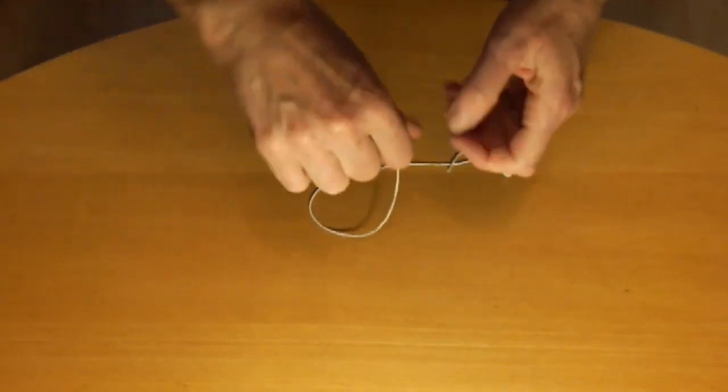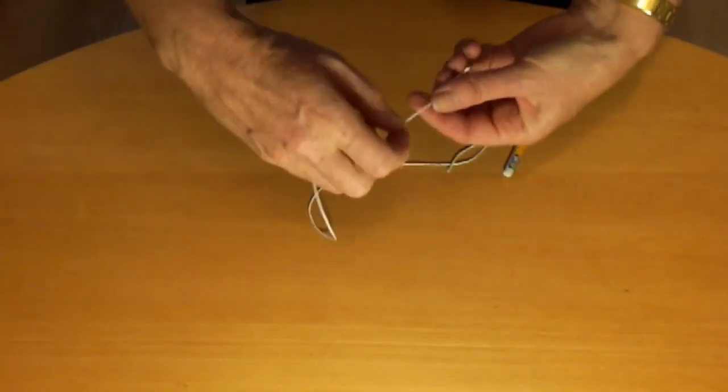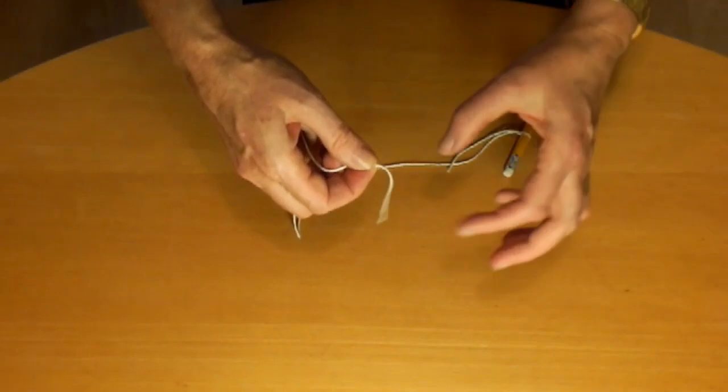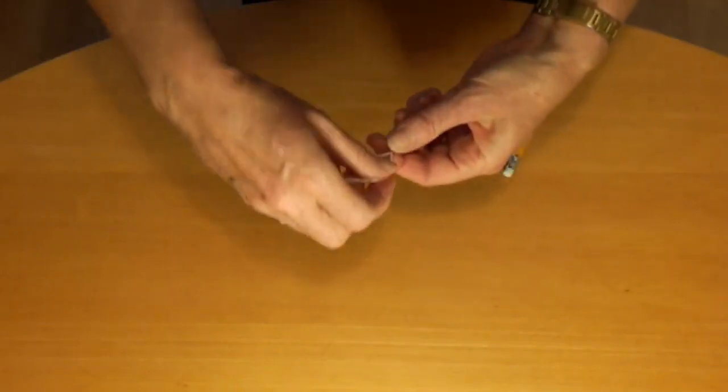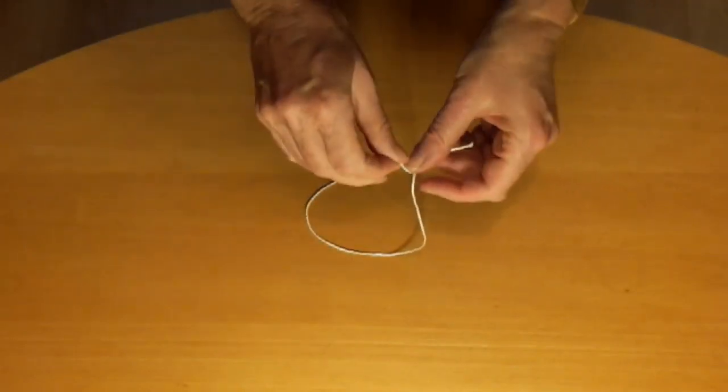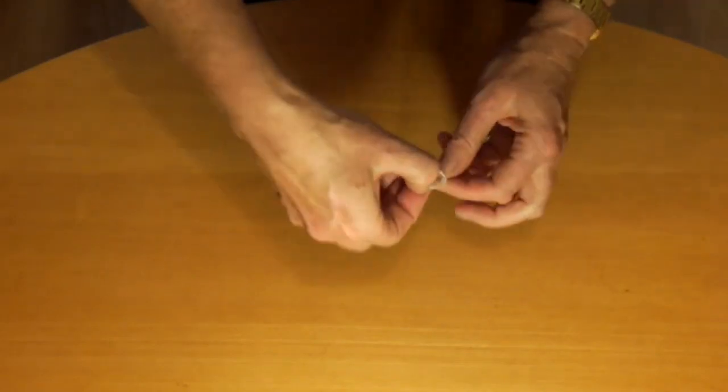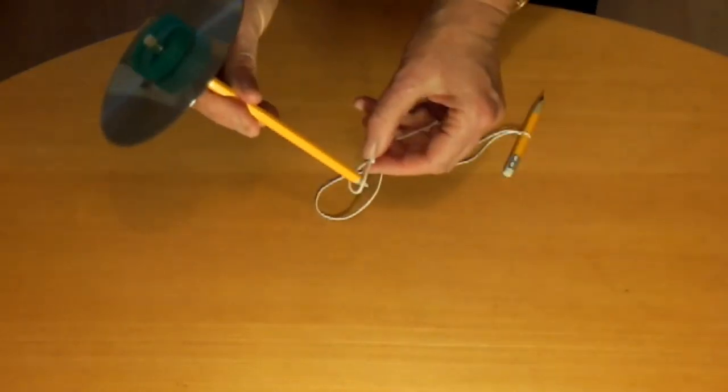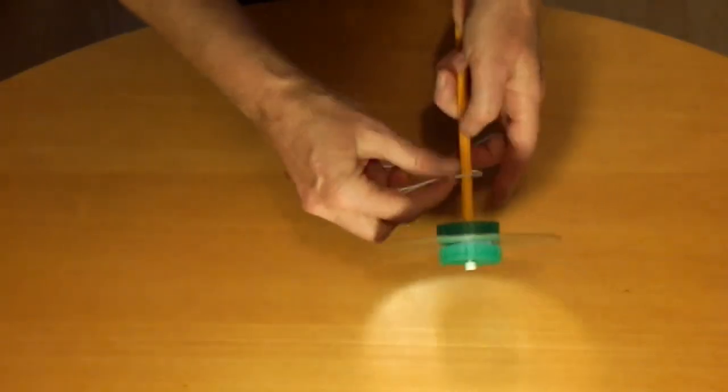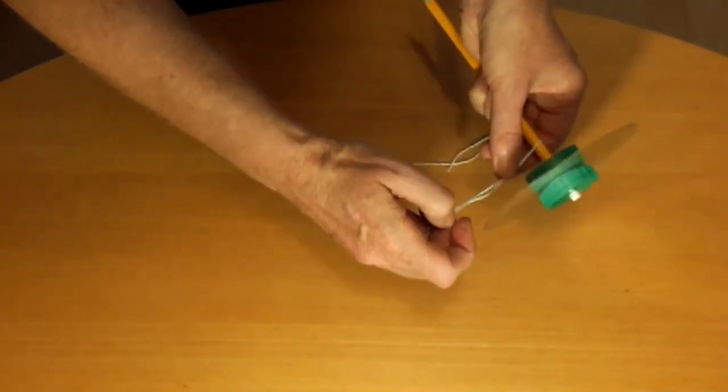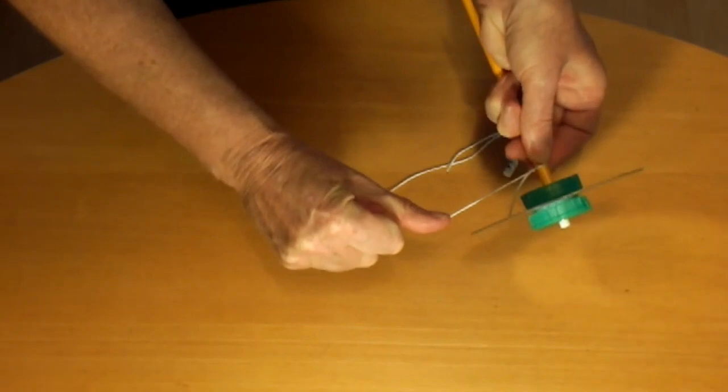Now I'll show you the other end. So leave a reasonable length. Wrap it around your finger. Make a loop. Push this end up through the loop. Put the pencil through it. Slide it up near the top. And pull it nice and tight.